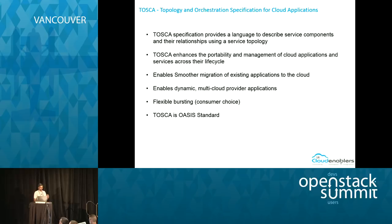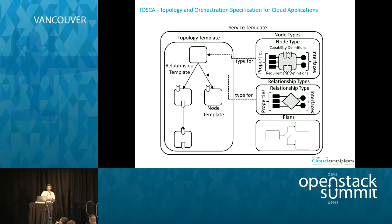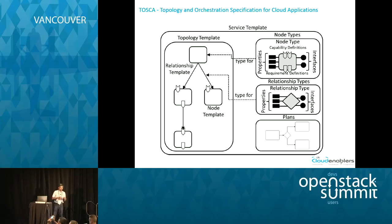Tosca is a Topology and Orchestration Specification for Cloud Applications. It improves the portability of application deployment across different clouds. It is a language to describe service components and their relationships using a service topology. Tosca is defined as XML. A service template contains a topology template, which in turn contains node types and relationship types. These topology templates can be combined in a plan and executed.